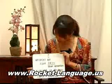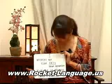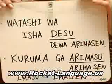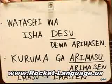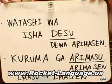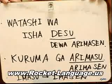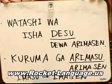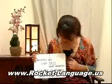Here's another example using 'there is' and 'there are.' 'Kuruma ga arimasu' means 'there is a car.' To say 'there isn't a car,' you say 'kuruma ga arimasen.' You use arimasen in both cases — very similar.